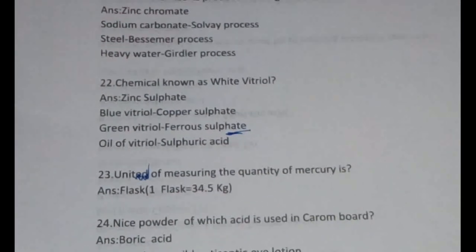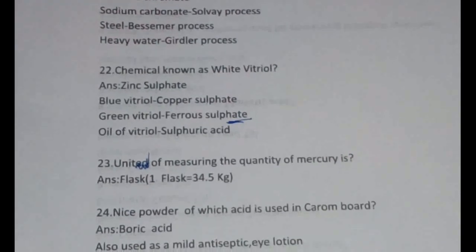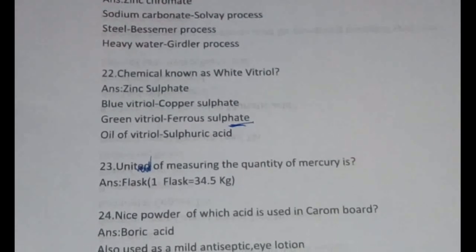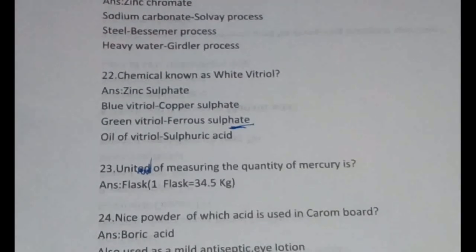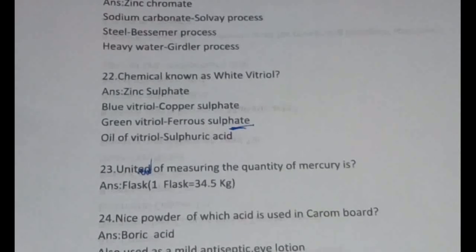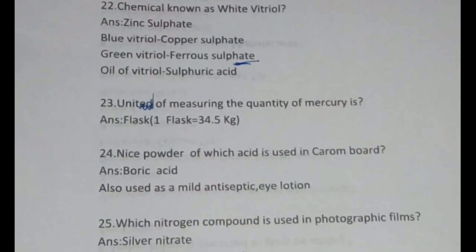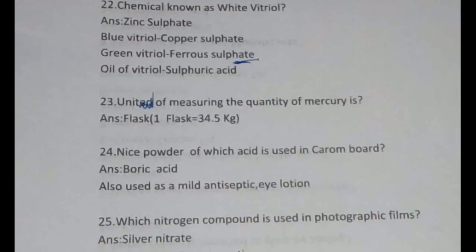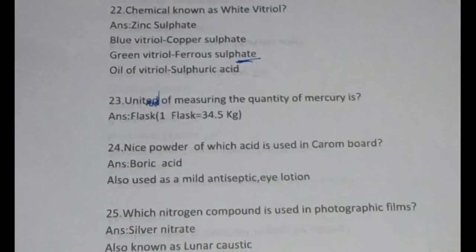The unit for measuring the quantity of mercury is a flask — one flask equals 34.5 kilograms. Keep unconventional units in mind, not just distance and mass. The fine powder used on carrom boards is boric acid, which is also used as a mild antiseptic and eye lotion. These are common but important from an examination point of view.